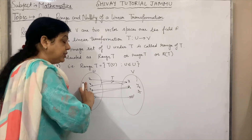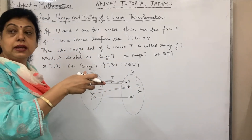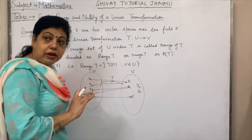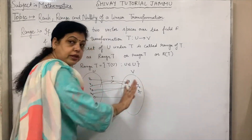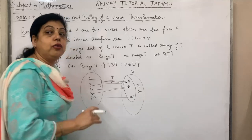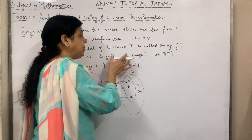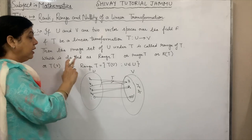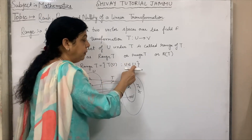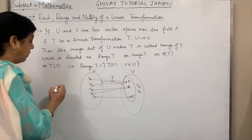Then these three elements are known as the range. Elements of U shifted into V are connected with how many elements? Y4 is present, Y5 is present, but no element of U is connected with Y4 and Y5. We exclude these two elements and take only these three elements.